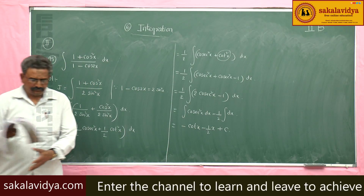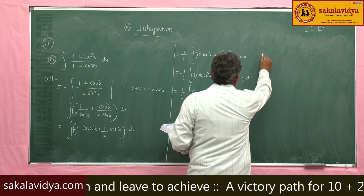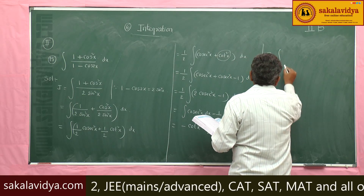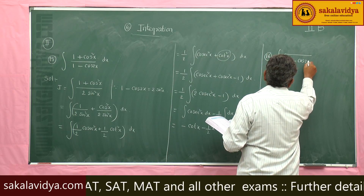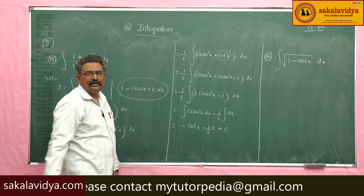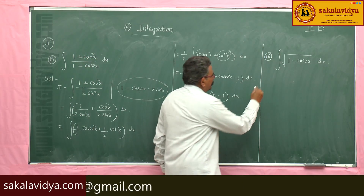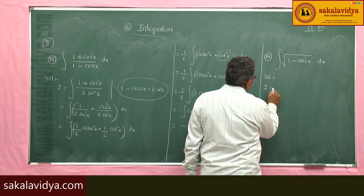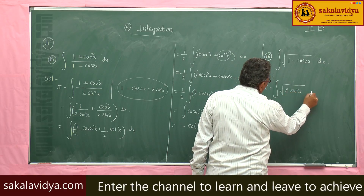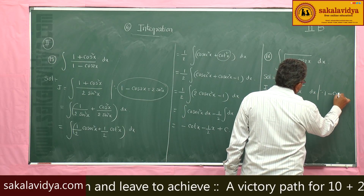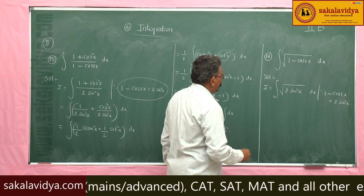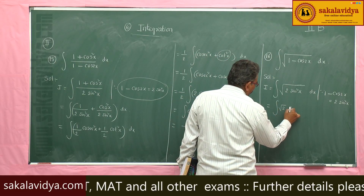Next, the 16th problem: evaluate the integral of √(1 - cos2x) dx. We already know that 1 - cos2x = 2sin²x. Using this formula, I equals the integral of √(2sin²x) dx, since 1 - cos2x = 2sin²x. The square root of 2sin²x is √2·sinx dx.